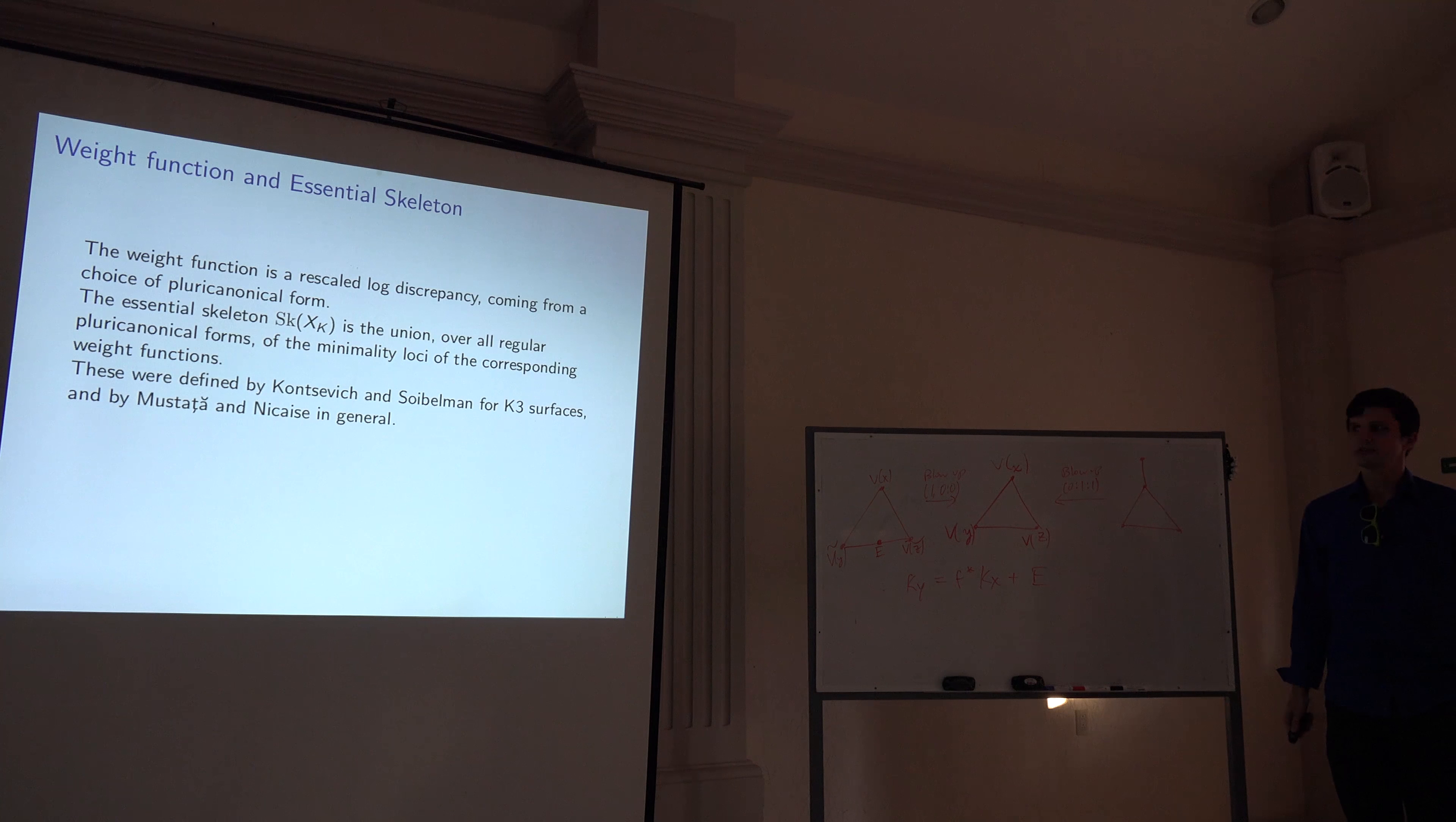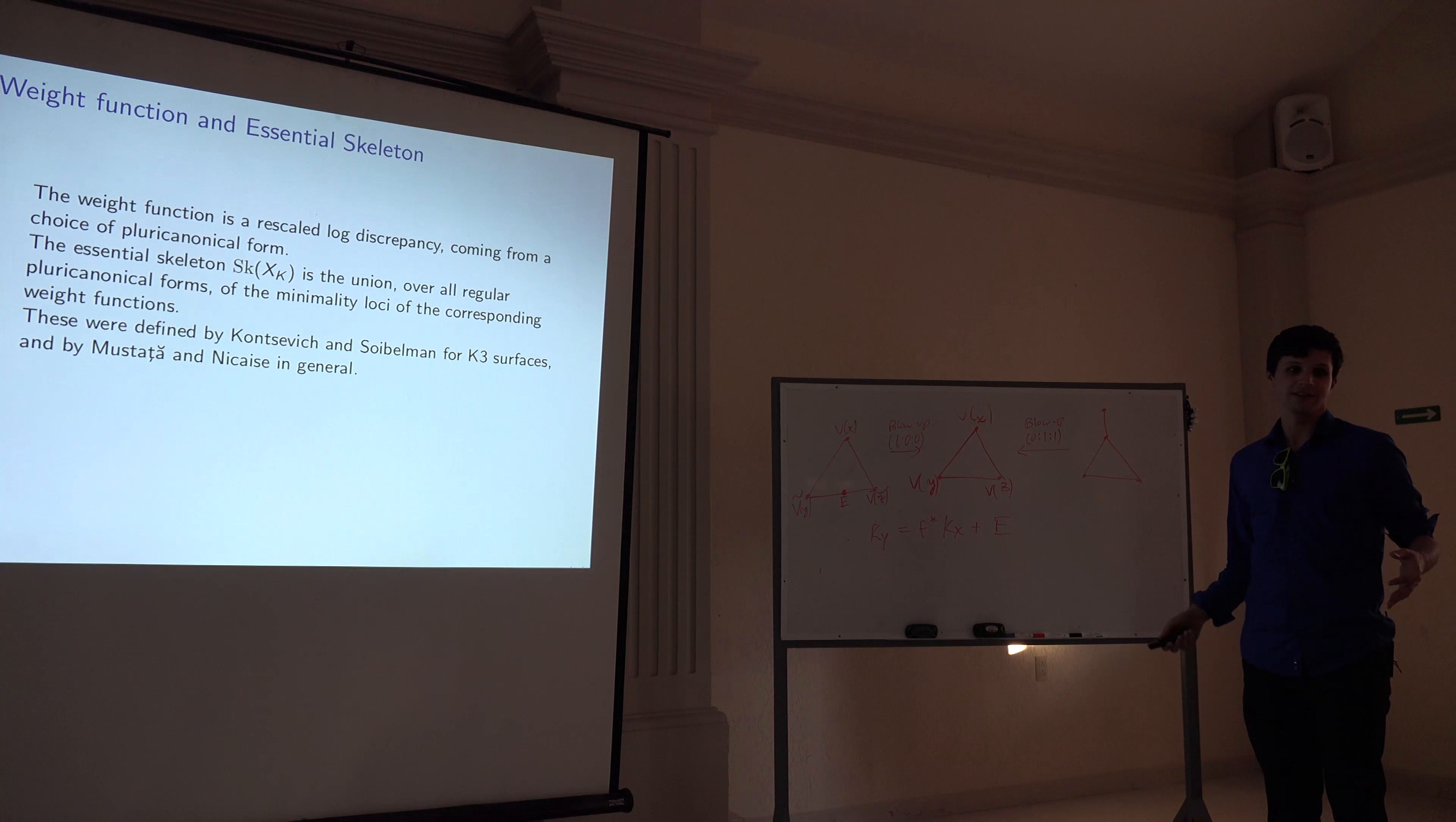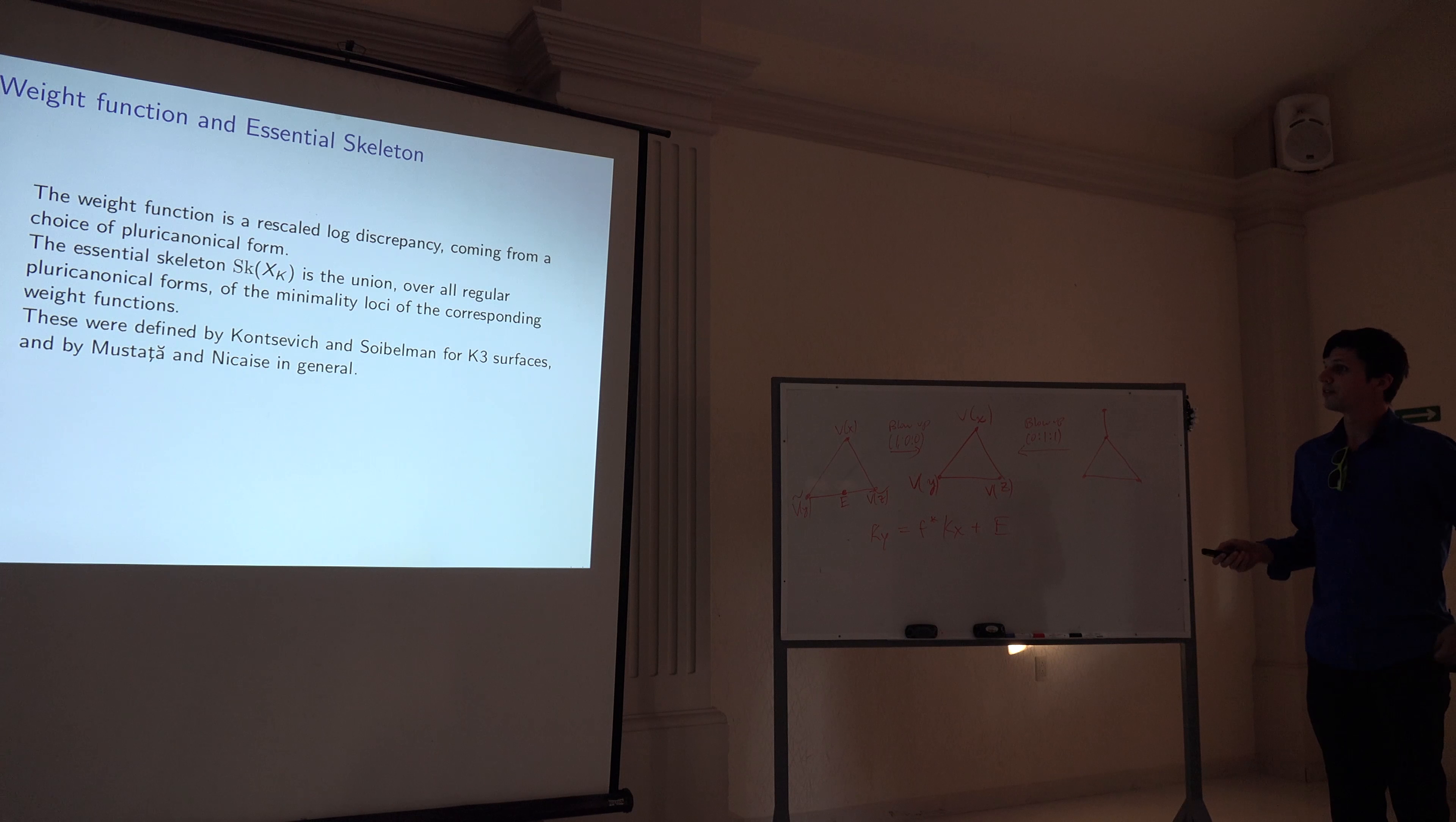So the first place this shows up is in Kontsevich, Soibelman and Soylen, where what they want to do is they want to do mirror symmetry for K3 surfaces. And so then the idea is that, so in that case, well, this is a Calabi-Yau, yeah, it's degenerating, and so we expect the special fiber to look like a sphere, and in that case, K3 surfaces really do get an S^2. And so the idea is this is supposed to be the base of the SYZ fibration. So what they wanted to do is they wanted to establish some way of seeing that sphere independently of a choice of model. So what they did is they defined this weight function, and so now when you're a K3 surface or Calabi-Yau, this regularity condition, well, there's only one, you know, regular, or there's sort of one regular meromorphic canonical form in every degree, which is the trivial one. So you just have to check that one trivial form, and its minimality locus is exactly that sphere.